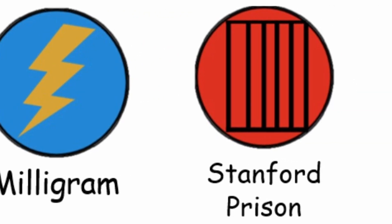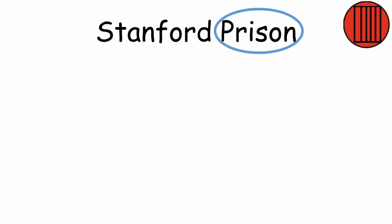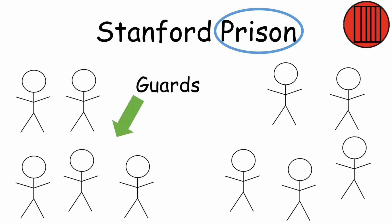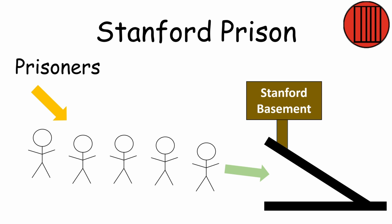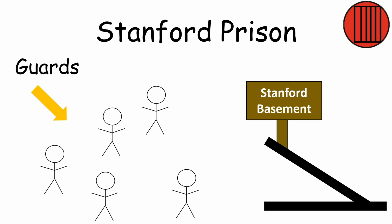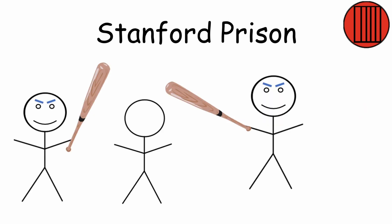Stanford Prison. Philip Zimbardo's Stanford Prison Experiment simulated a prison environment with participants assigned as guards and prisoners. The prisoners were arrested by real police and brought to a fake jail in the basement of Stanford University's psychology building. The guards were told not to let the prisoners escape, and the experiment was supposed to last two weeks. However, the guards soon became abusive and the prisoners were traumatized. The experiment had to be ended in just six days.